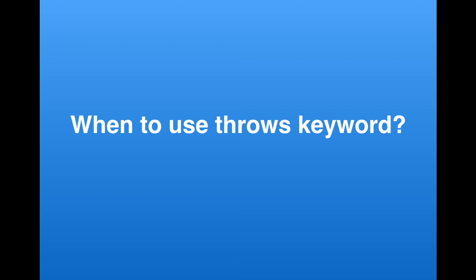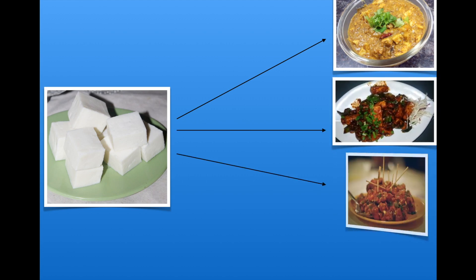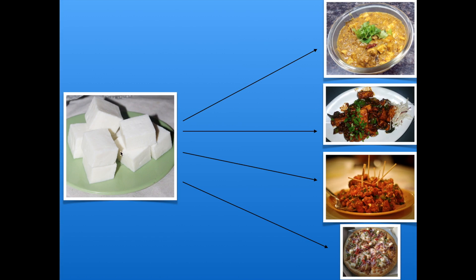To make you understand this, I'm going to use this — this is paneer. I haven't made it, I just purchased it from the market because I want to make some paneer curry. Using this paneer I can make paneer butter masala, paneer chili, paneer manchurian, or paneer pizza. So this paneer is a common thing, and using it I can make specific dishes.